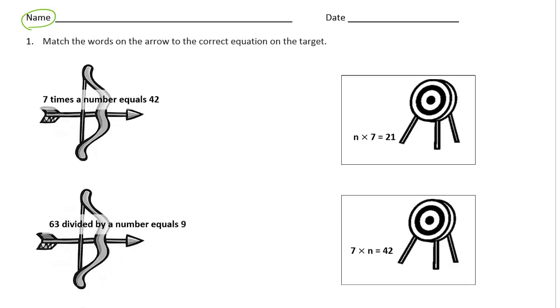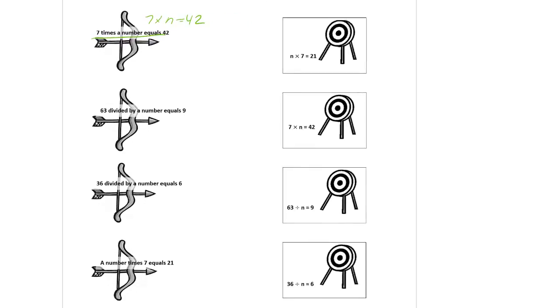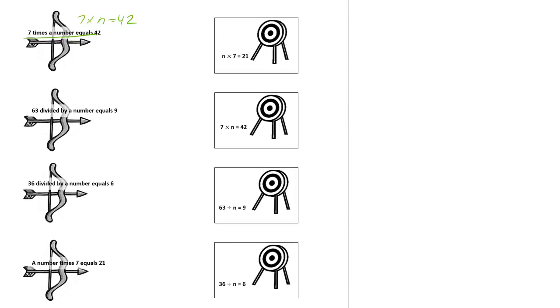We see the words on the arrow: 7 times a number equals 42. So this is going to say 7 times, and the number is going to be n, equals 42. That's the equation we're going to be looking for to match this up. And here we have it.